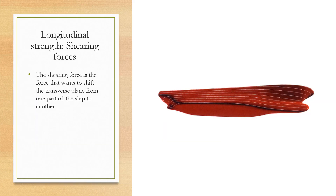We'll start with the longitudinal strength and shearing forces. When a ship is in calm water the total upward force equals the total weight of the ship, but locally this equilibrium is not realized because the ship is not a rectangular homogeneous object. The local differences between upward pressure and local weight give rise to shearing forces that lead to longitudinal tensions. The shearing force is defined as the force that wants to shift the transverse plane from one part of the ship to another.